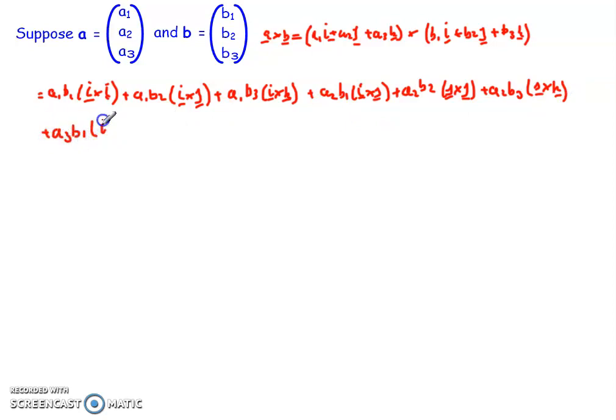And then the final one would be plus a3 b1 k cross i plus a3 b2 times k cross j plus a3 b3 times k cross k. Great, so we've got all that multiplied out. That just makes it look a hell of a lot more tricky.